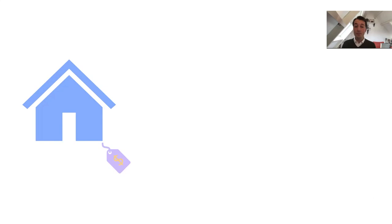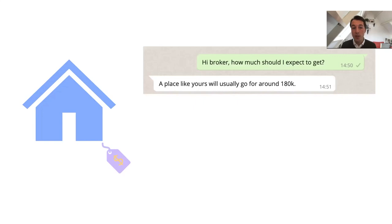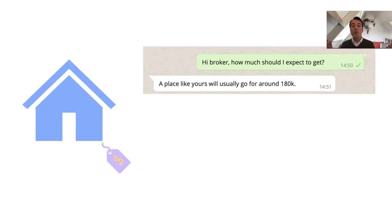So I go to a broker and I say, hey broker, how much should I expect to get if I put my house up for sale? And they might say something like, a place like yours will usually go for around 180k. So they're saying 'a place like yours' — taking into account some aspect of my place, maybe the area or the type of house. And they're saying 'will usually go for around', which is kind of ambiguous — it probably means something like an expected value, with 'like yours' being some size or something.